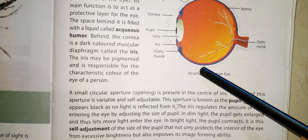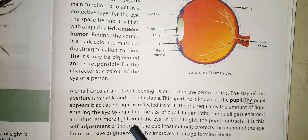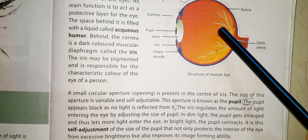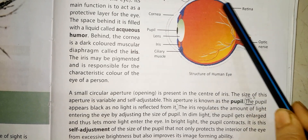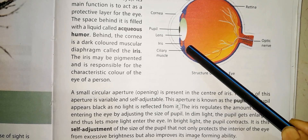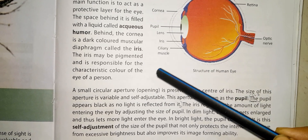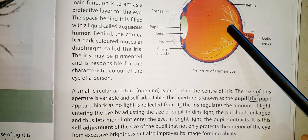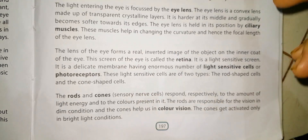In dim light, the pupils get enlarged and thus more light enters the eye. In bright light, the pupil contracts. It is this self-adjustment of the size of the pupil that not only protects the interior of the eye from excessive brightness but also improves image-forming ability.